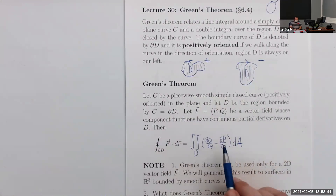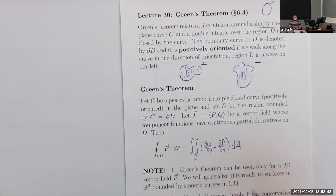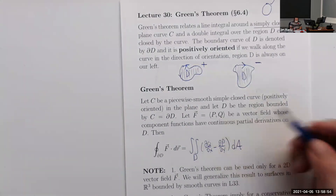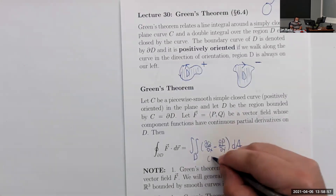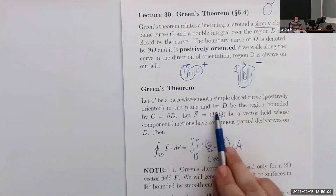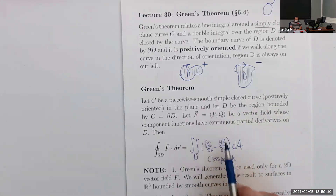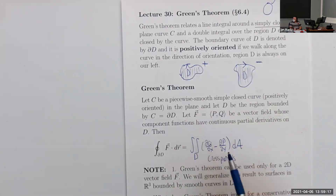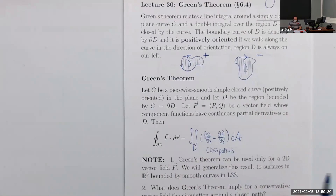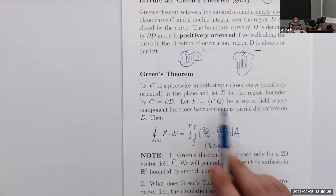This is Green's theorem: the line integral of P dx + Q dy around C equals the double integral over D of (∂Q/∂x − ∂P/∂y) dA. These are the cross partials of P and Q — we take the derivative of Q with respect to x and the derivative of P with respect to y, then subtract. This only works in 2D; we'll learn a 3D generalization in a future lesson.